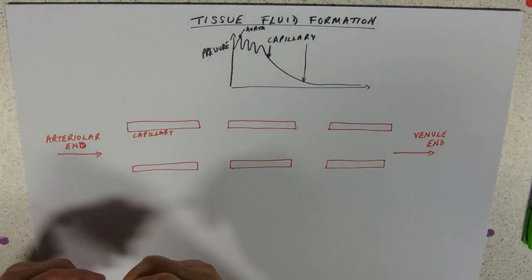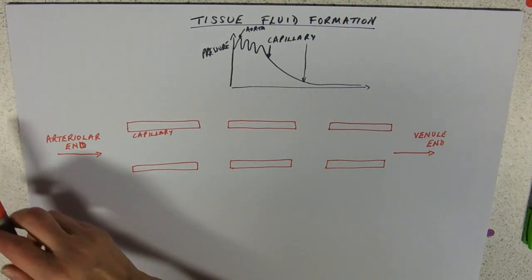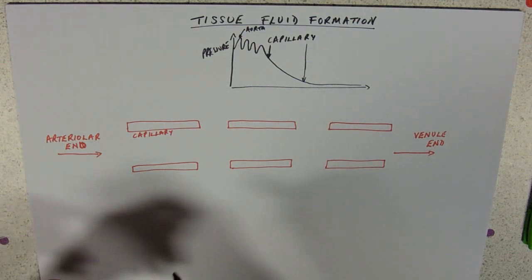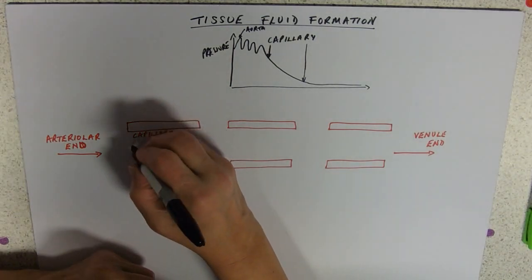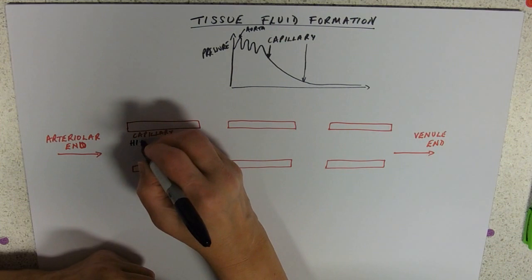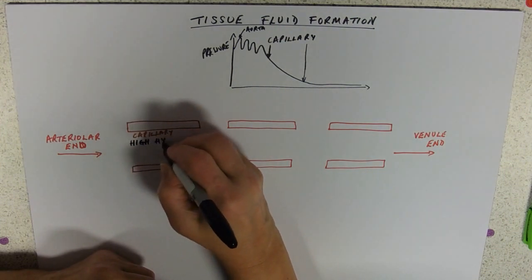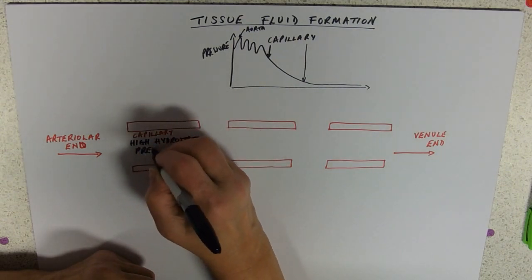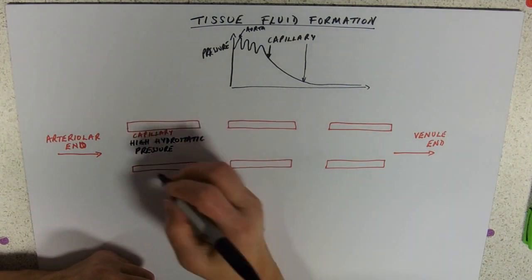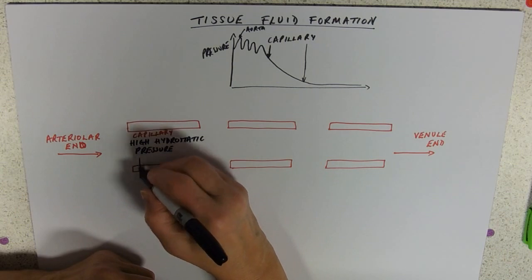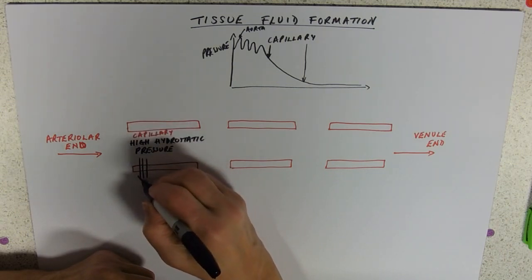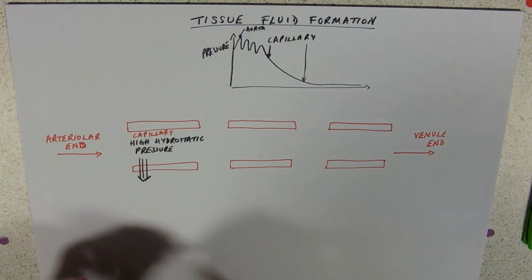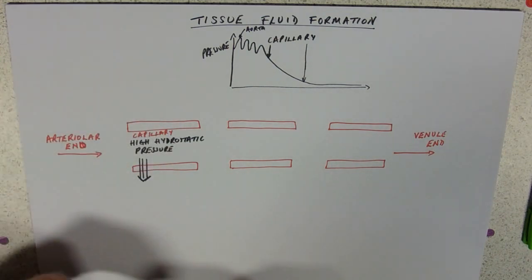It's coming in with a reasonably high pressure. We've got two pressure systems going on here. At this end, at the arteriolar end, we've got a high hydrostatic pressure. And this is going to tend to force the fluid out and it's going to leave through these gaps. High hydrostatic pressure is going to force it out.